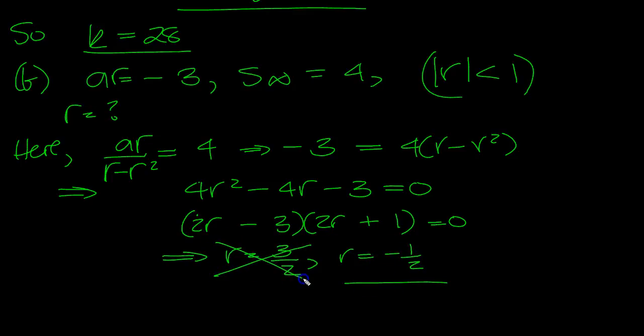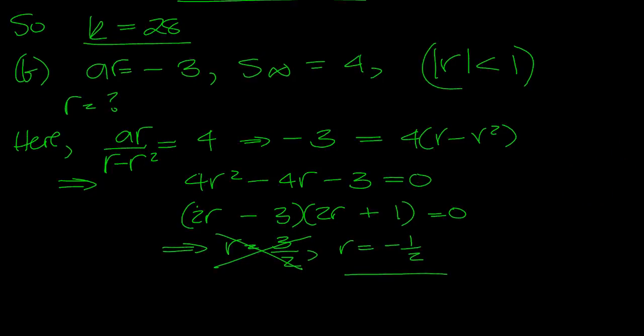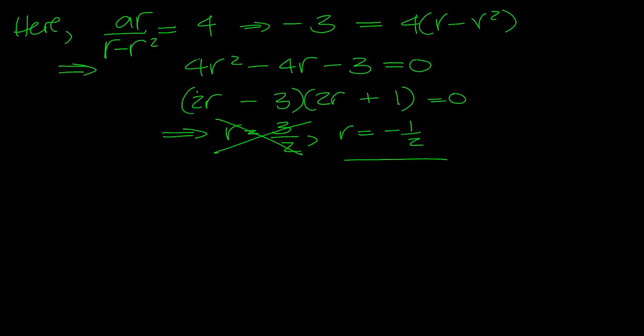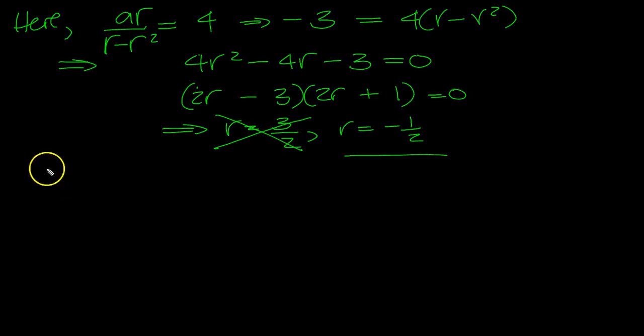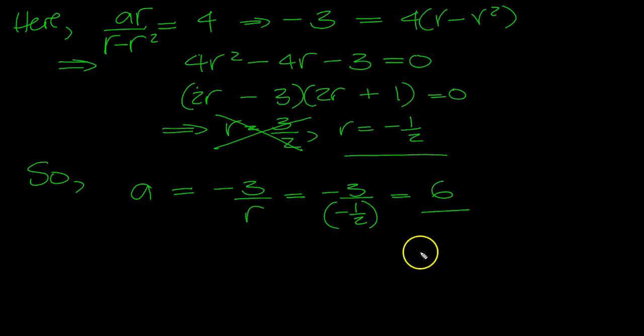This one is not applicable because the modulus of r must be less than 1. So ar equals minus 3, which means a equals minus 3 over r. a equals minus 3 divided by minus 1/2, which is 6.